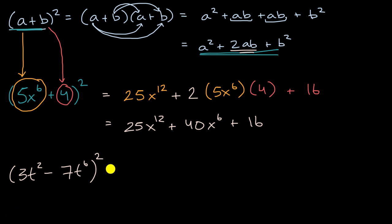All right, we're going to do it together now. So this is our a, and our b now we should view as negative 7t to the sixth, because this says plus b, so you could view this as plus negative 7t to the sixth. We could even write that if we want. We could write this plus negative 7t to the sixth if it helps us recognize this whole thing is b.